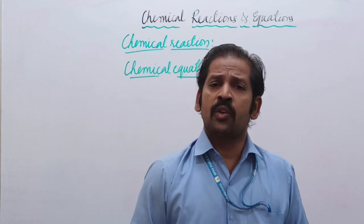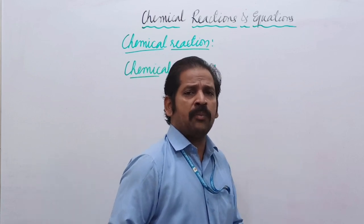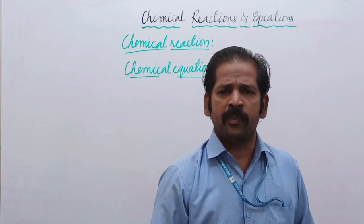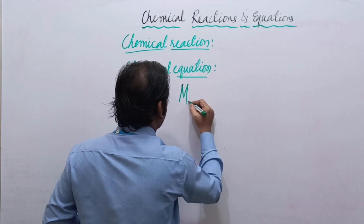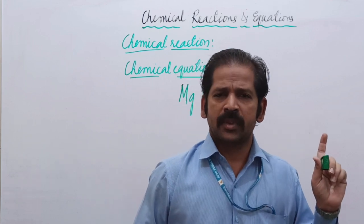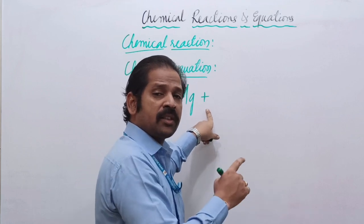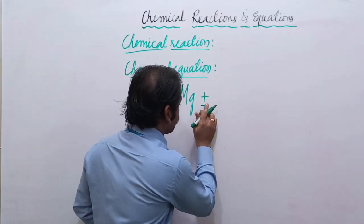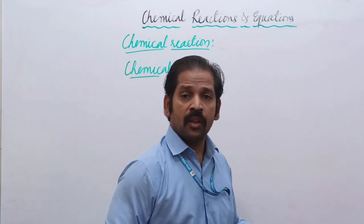For example, magnesium is reacting with oxygen to form magnesium oxide. I will use the symbol of magnesium, which is Mg. The plus symbol means it is going to react with — so magnesium is going to react with oxygen.